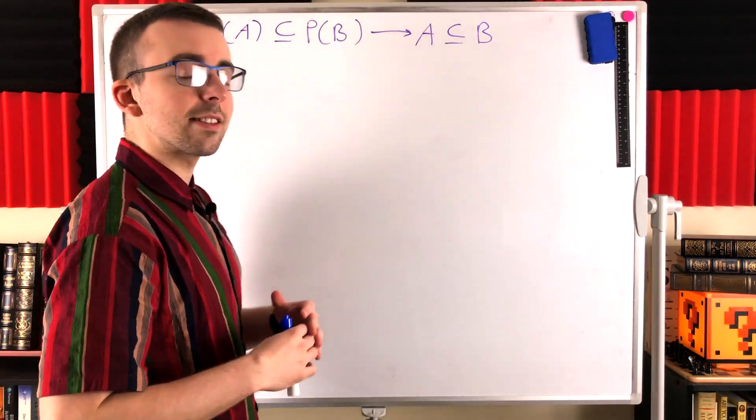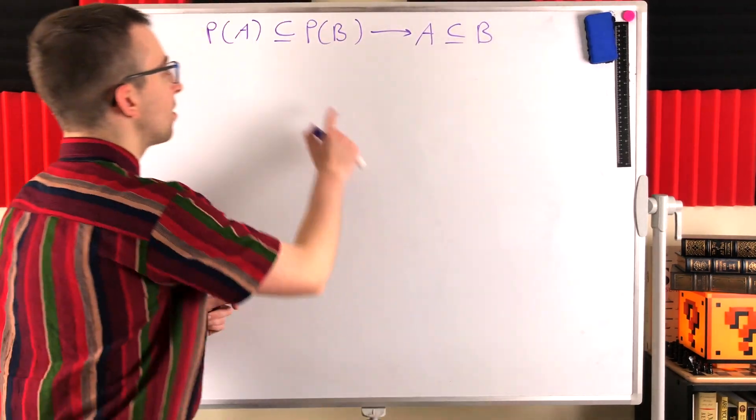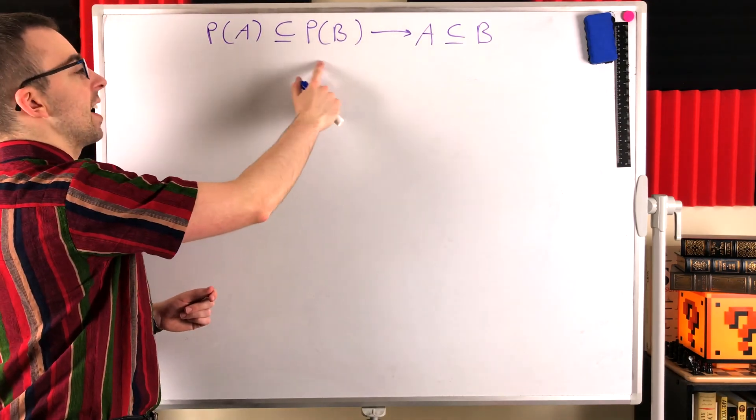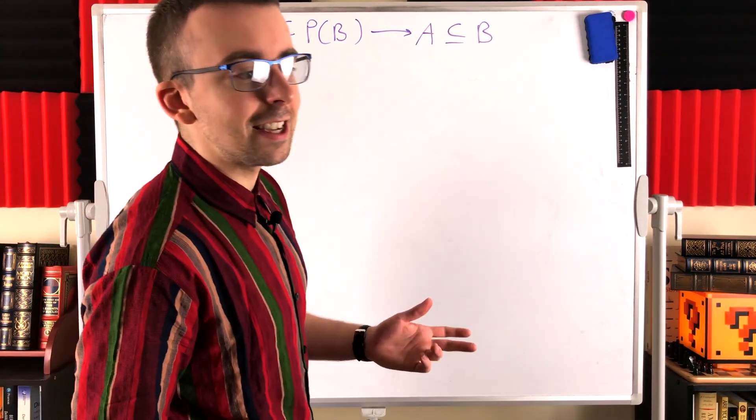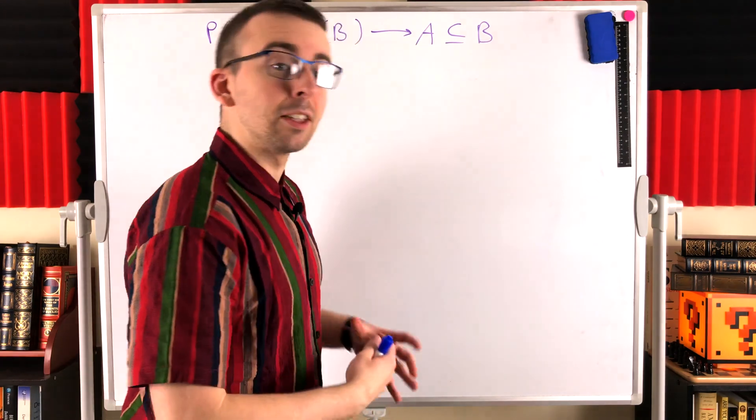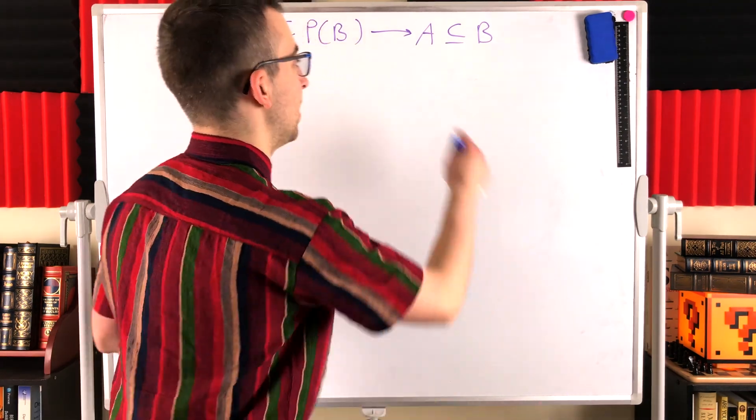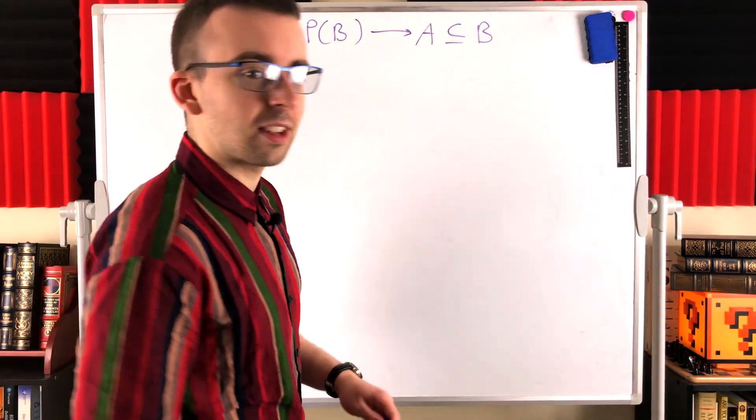So this tells us that every subset of A is also a subset of B. So that should make sense that all the elements of A have to be elements of B, and thus we get our desired subset relation.